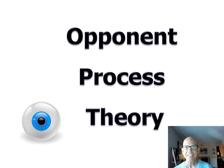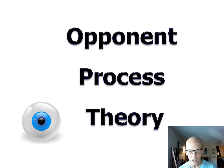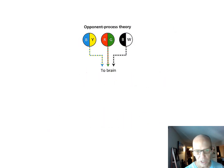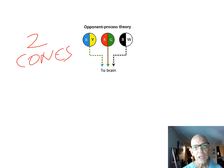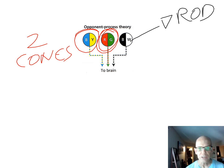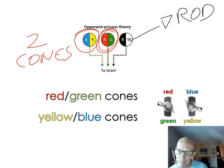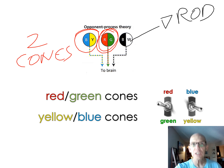The second theory is opponent-process — an antithesis to trichromatic. It was proposed partly because trichromatic couldn't explain color blindness: my dad is red-green color blind but can still see yellow. Opponent-process says you have two kinds of cones: one detects both blue and yellow (like a switch: up for blue, down for yellow, middle off), and another detects both red and green. The third channel is a rod for black and white.